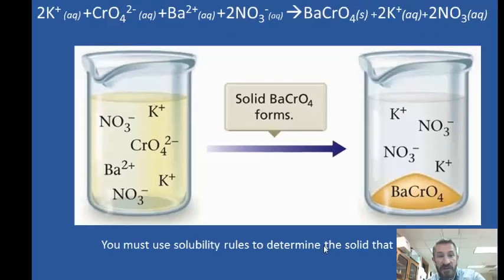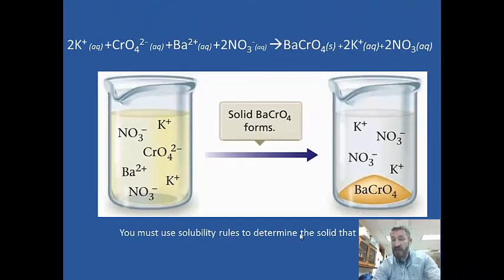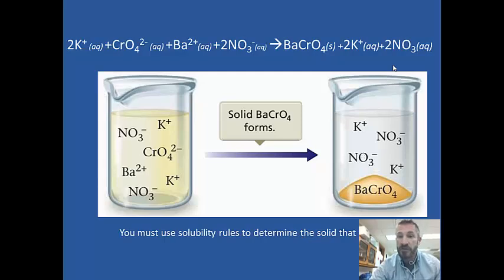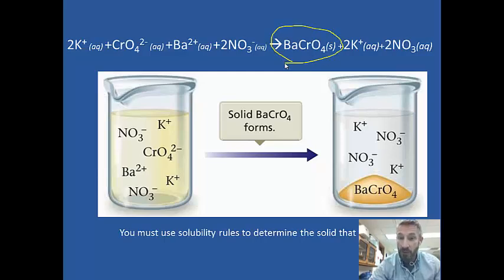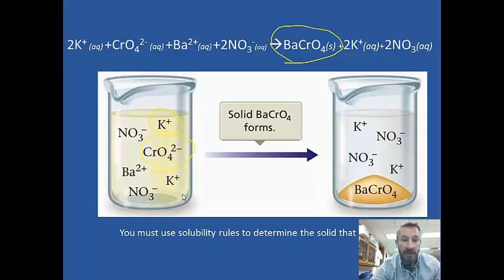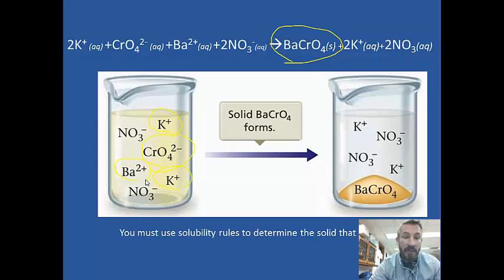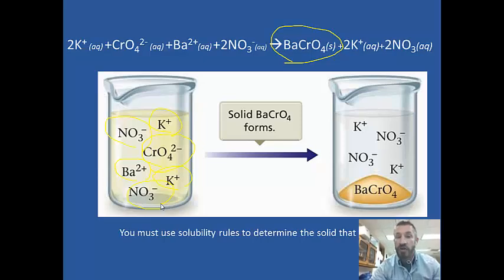We also need to look at what happens when we mix these solutions using our solubility rules. For example, we see that barium chromate is a solid that's produced — chromate is typically insoluble. In the balanced equation, for every 1 chromate there are 2 potassium ions. You want to draw particle representations that are representative of the formula written. Notice there's 1 barium, but for that 1 barium we have 2 nitrate ions. The ratios of the particles are equal to the molar concentrations we see in the formula.